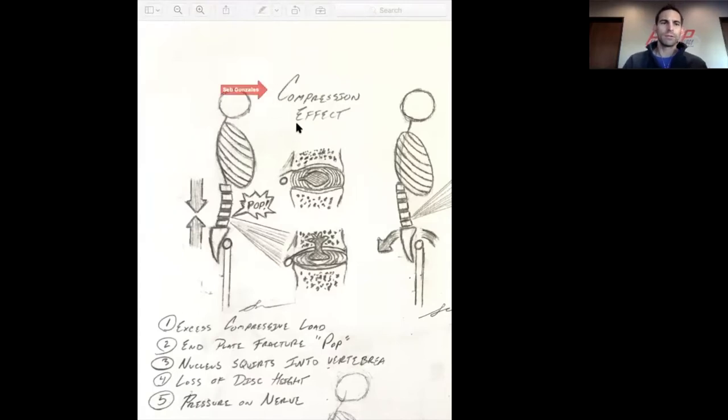And first thing I want you to realize is that we have the compressive effect. This is when you're lifting heavy, when you're deadlifting, when you're squatting and so on, and all of a sudden you feel a pop. This is typically what happens here. We call this a vertical herniation. Now, let me describe really quickly what's going on on the screen here.